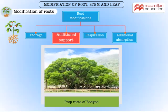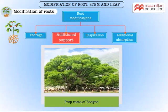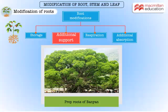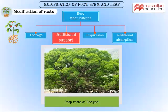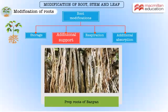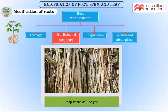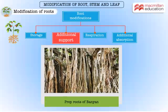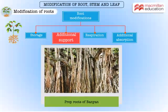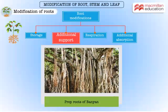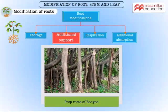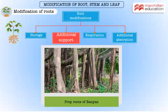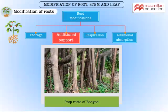The banyan tree has aerial roots hanging vertically from its branches. When they reach the ground, they act like pillars, giving the hugely branched tree the additional support it needs. These aerial roots are called prop roots.